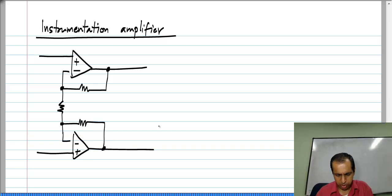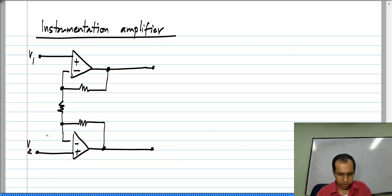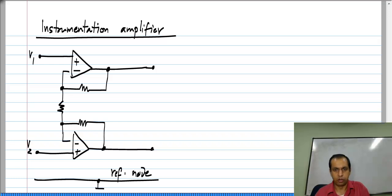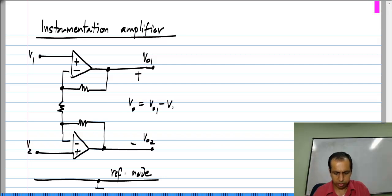This circuit has two op-amps, and you will be able to verify that each of them is in negative feedback. Let us say I have V1 and V2 at the two inputs — this means they are V1 and V2 with respect to some reference node. I have these two node voltages as the outputs VO1 and VO2. The difference between these is considered to be the output VO, which is VO1 minus VO2.